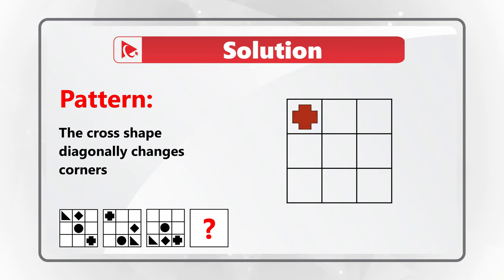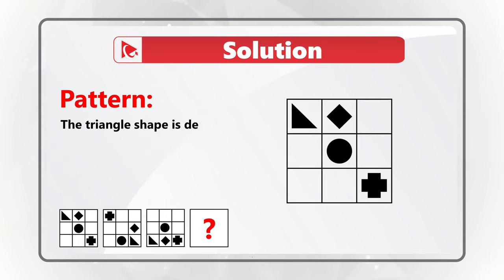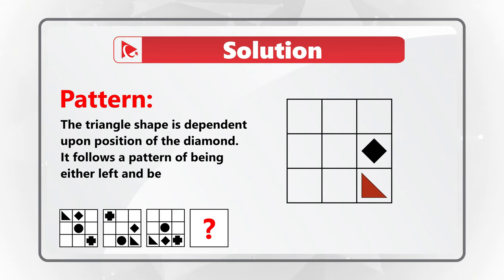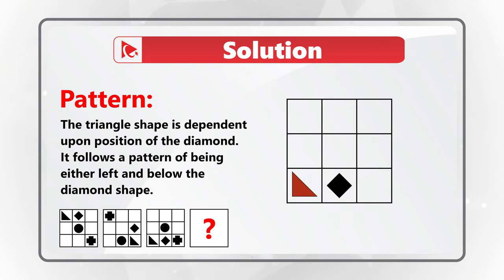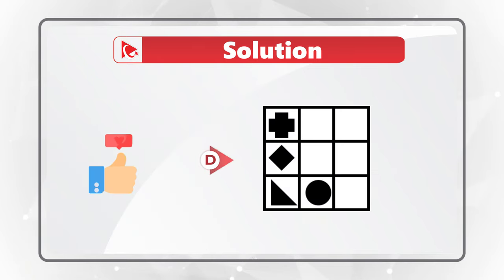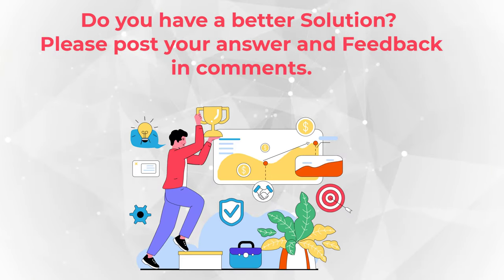The most interesting is pattern four: the triangle shape is dependent upon the position of the diamond. The triangle follows the diamond and is either to the left or below the diamond shape. This is why the correct choice here is choice D.